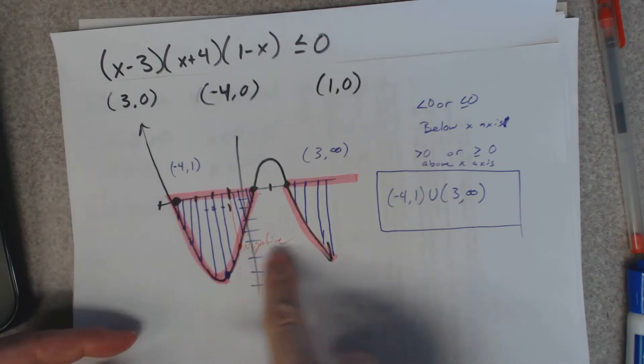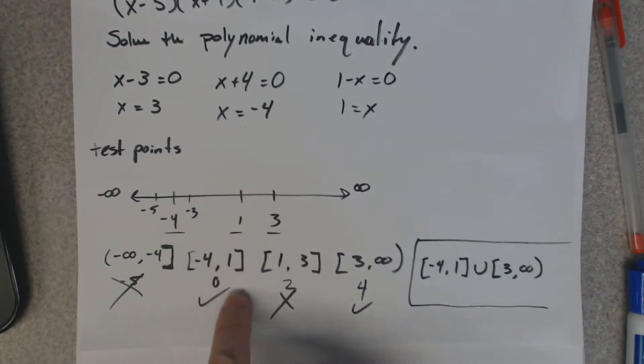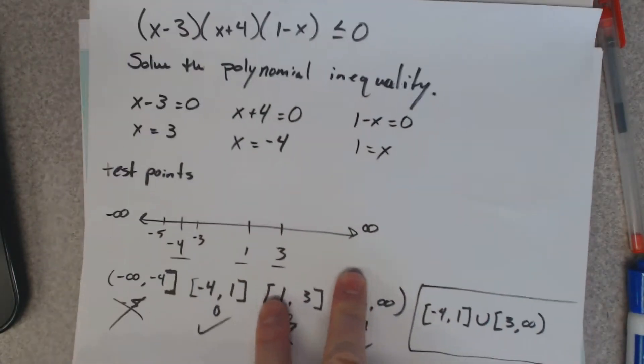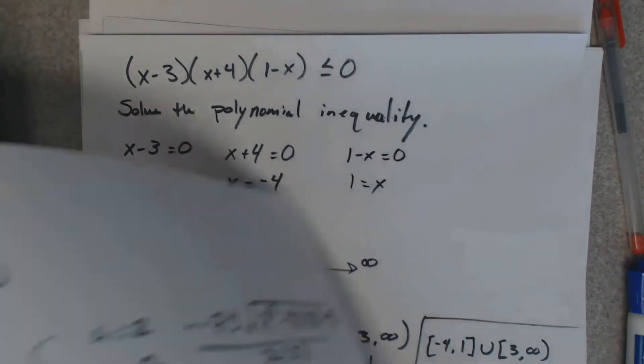And what this does is it's a lot less work. With the other method, you got to pick a number from each one of these, plug that number in up here and see if it works. It's a lot more work to do it like that.